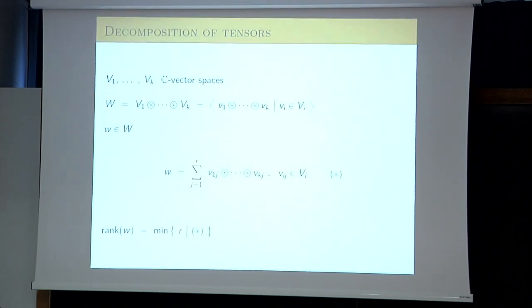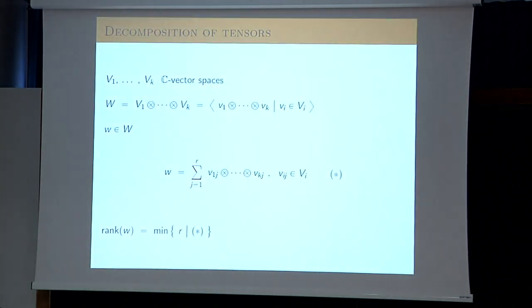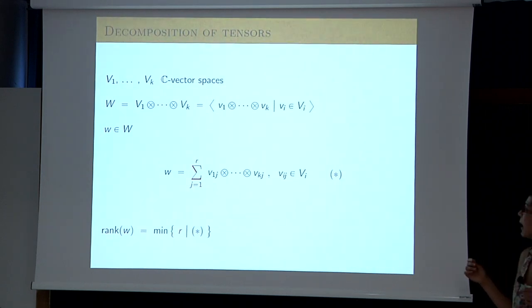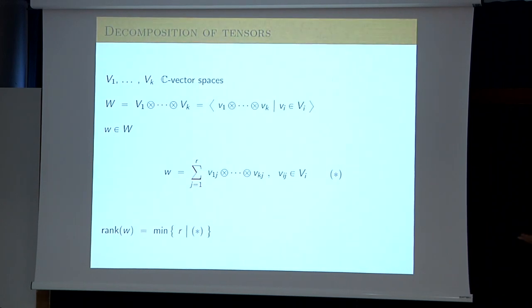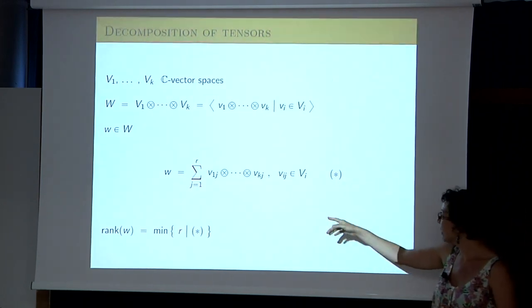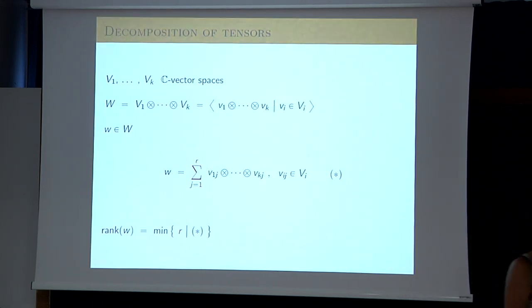Let me start by defining the tensors I'm interested in. I will fix K complex vector spaces and consider their tensor product. This is again a complex vector space W. This vector space is generated by vectors that we call indecomposable — these are just tensor products of vectors in the V_i's. In general, an element of this tensor product is a sum of indecomposable tensors.